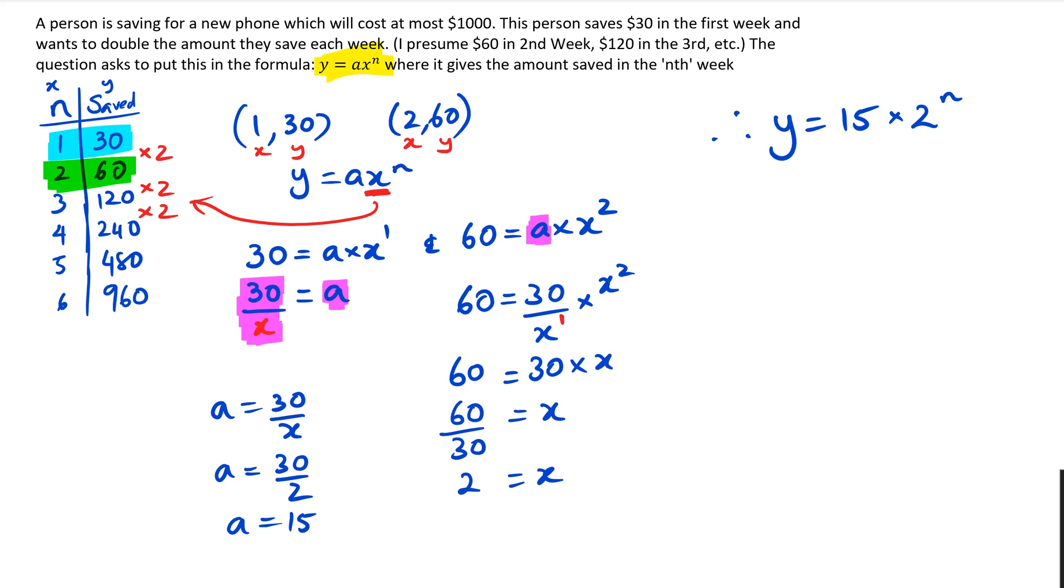Now in saying that, I'm just going to extend this question real quickly because I'm looking at the question itself. You know how it says at most $1000? So I'm probably guessing the next part of this question would be like, which week would he have enough money to buy this phone? So what we're going to do is you know how we have that original table where we have n and the amount of money saved, so we're going to write it all down: 1, 2, 3, 4, 5, and 6.